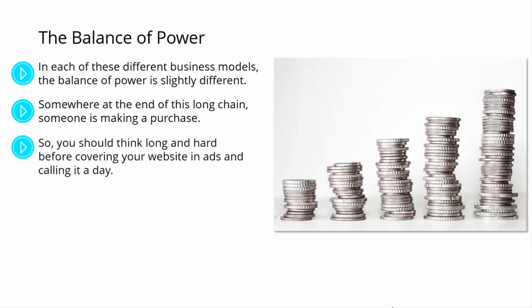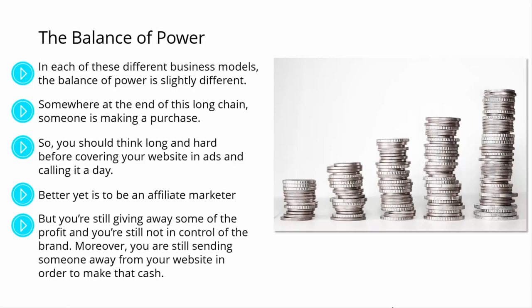So you should think long and hard before covering your website in ads and calling it a day. If you go direct to an advertiser and get paid per month for a display ad, then you'll be a little higher up the ladder, because you'll be making money directly from the advertiser without anyone taking a cut in between. Better yet is to be an affiliate marketer. Affiliate marketers often make very large cuts of the overall profit, and in the case of digital products, this can sometimes be as much as 70% or even 90%. The product owners don't mind giving away so much profit, because they wouldn't have made the money themselves anyway — this is in addition to what they're already making from their own sales. And the more commission they give away, the more sellers they attract to help them sell units. But you're still giving away some of the profit, and you're still not in control of the brand. Moreover, you are still sending someone away from your website in order to make that cash.